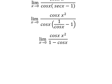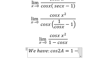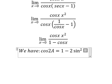Next we have the formula in here: cosine 2A equals 1 minus 2 sine squared A.